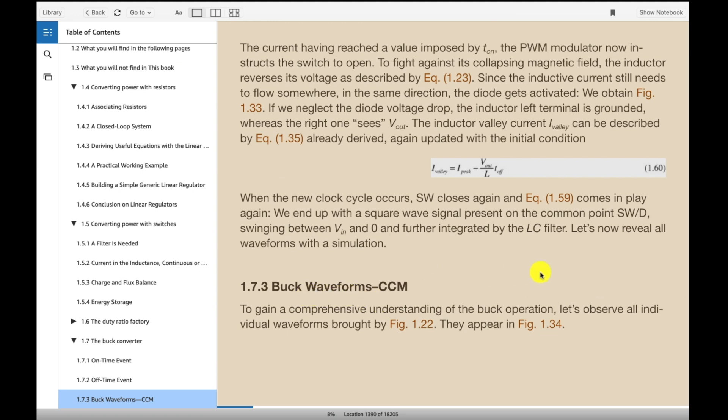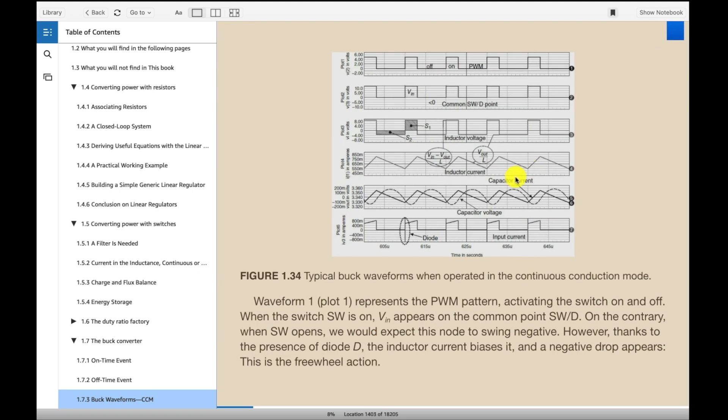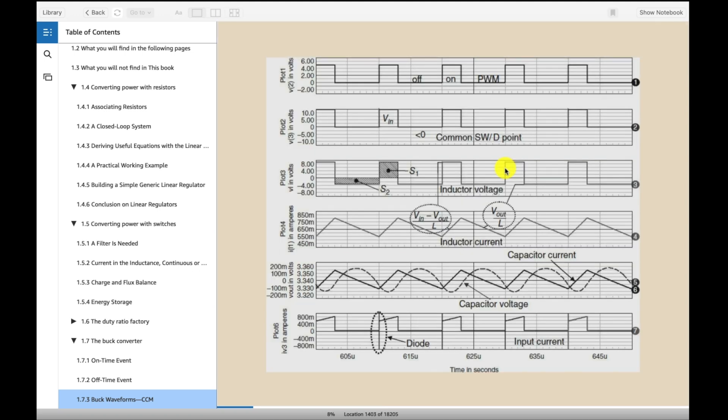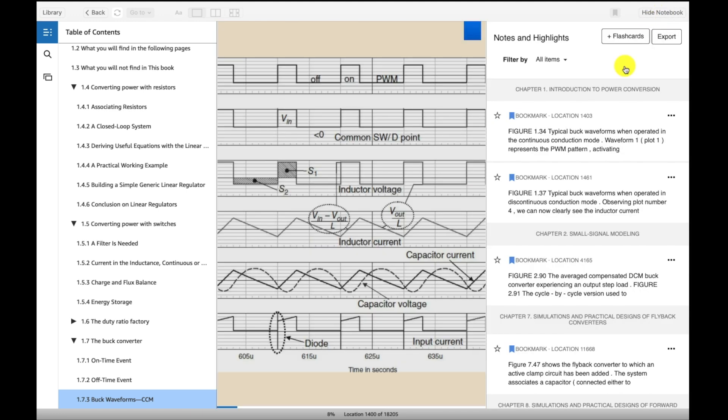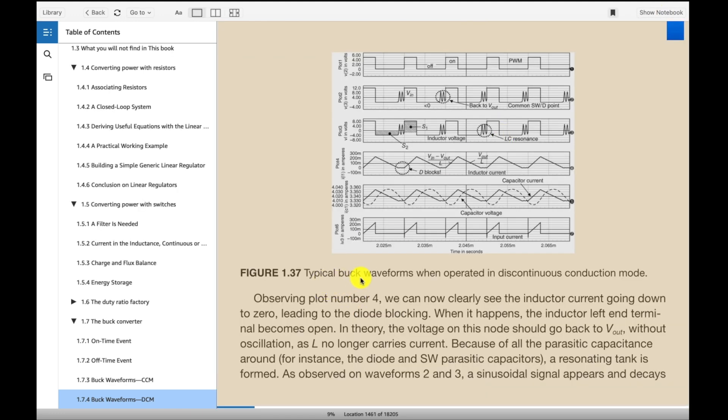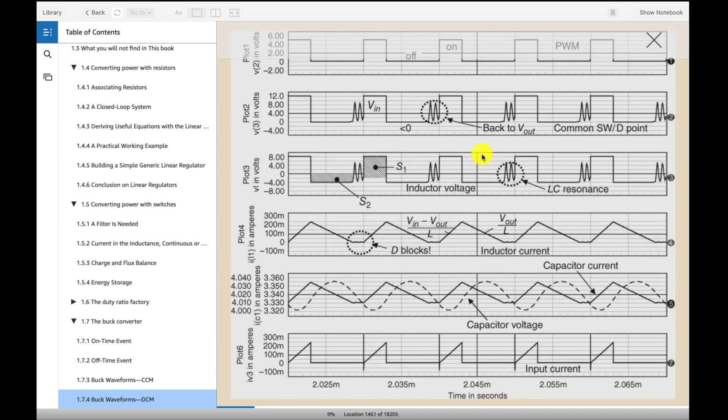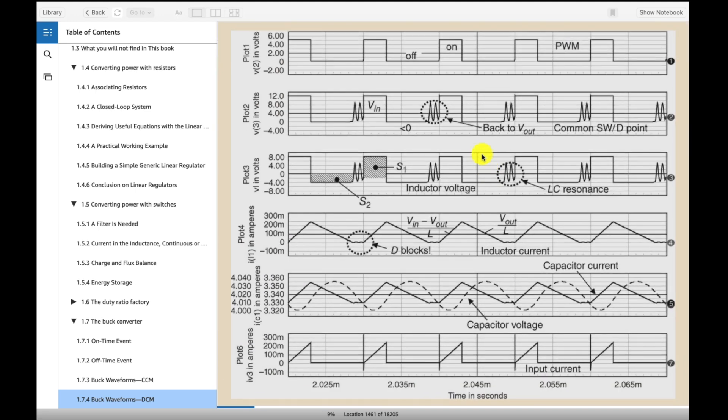Now, this is the buck waveforms. I just wanted to show you some of those that he shows. And you can see pulse width modulation. The inductor current capacitor voltage. Just wanted to show you some examples here. Yeah. So, here's typical buck waveforms when operating discontinuous conduction mode. The other one was continuous. And here we go with discontinuous. We've already seen that. Some other videos I've done recently. But here's some pictures. And these look a lot like what we saw in the past videos, right?